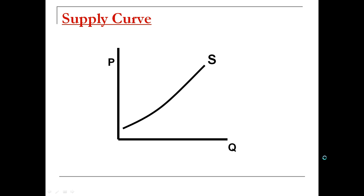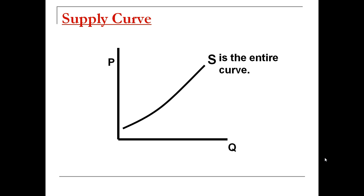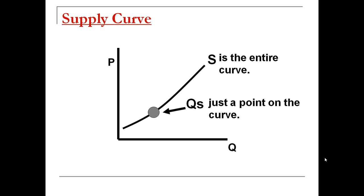If we graph that, we get a supply curve. Price (P) is always on the y-axis and quantity (Q) is on the x-axis. Supply curves are always upward sloping because as price goes up, quantity supplied goes up. When we're talking about supply, we're talking about the entire curve — factors other than price will shift that entire supply curve. Quantity supplied is just a point on the curve, so when price changes, you're moving from point to point along the supply curve.